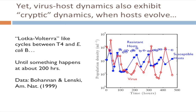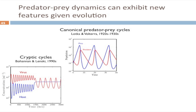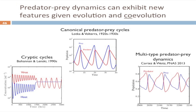To sum up: there's the classic notion of Lotka-Volterra dynamics going back to the 1920s and 30s. Then in the 1990s, researchers including Nelson Hairston and Steve Ellner proposed that cryptic cycles can occur when hosts evolve — when there are two types changing in frequency. Michael Cortez, a former postdoc in my group now faculty at Utah State, and I proposed a notion of multi-type predator-prey dynamics. When both the host and virus co-evolve, you can get something even different: the predator peak seems to precede the prey peak — a reversal of the canonical cycle order.